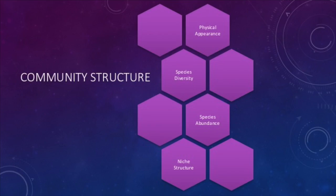When we look at the structure of a community, we are concerned about four things: its physical appearance, or the size and shape of the community; the species diversity, or the number of species in the community; the species abundance, or the number of individuals of each species; and the niche structure, or the number and variety of niches in the community.